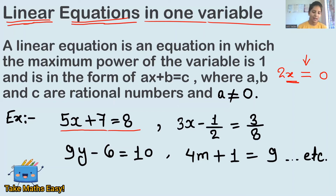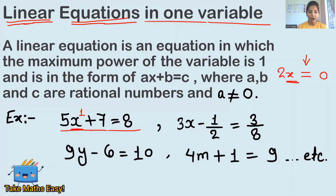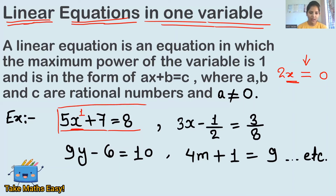How do you identify it? The variable here is x. What is its power? There is no power written, so that means the power is one — if there is no power written on the variable, the power is one. And only one variable, x, is present here. So this is the example of a linear equation in one variable.